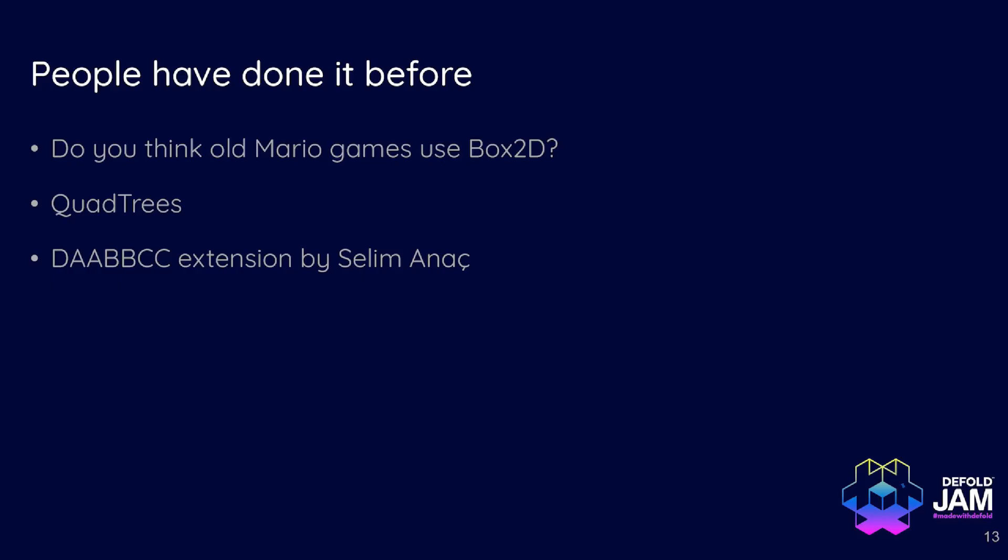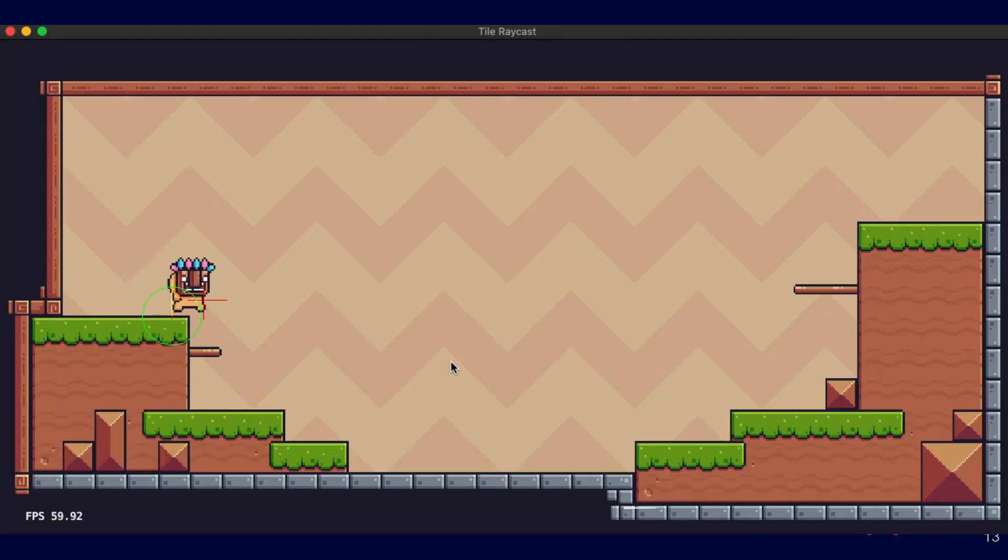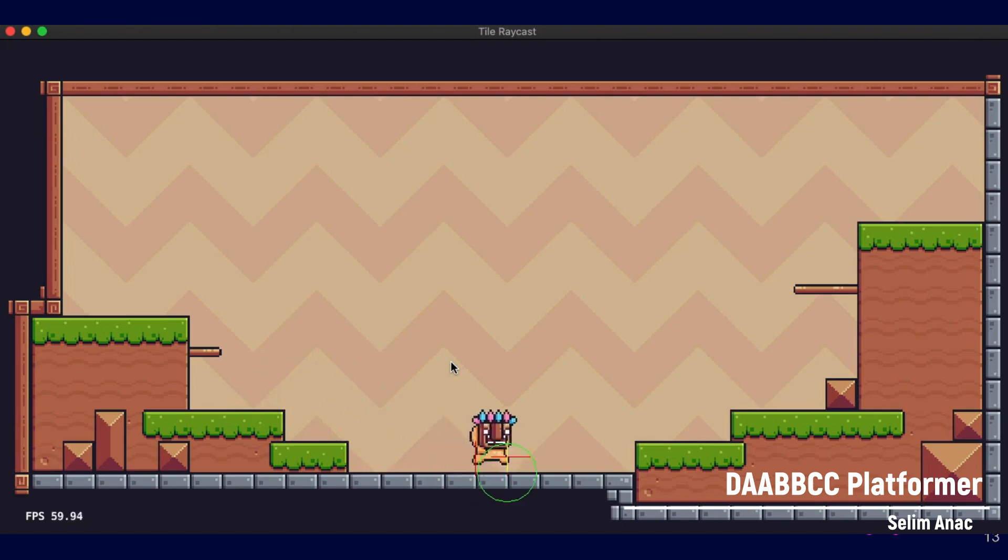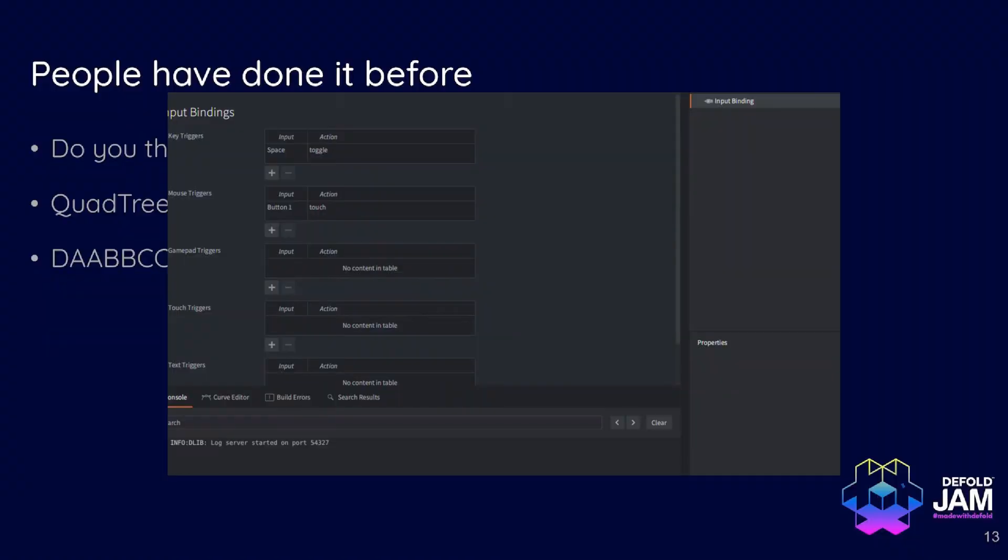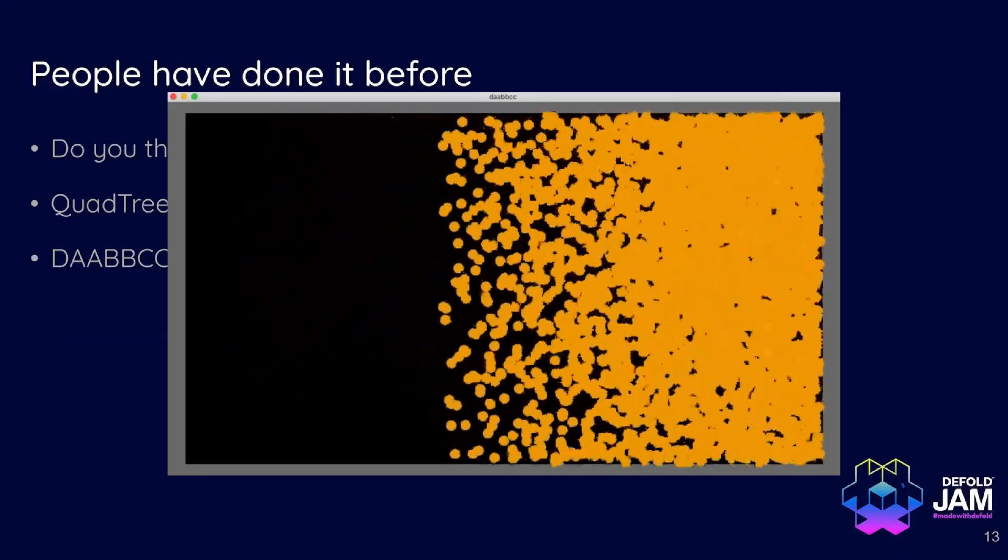But you don't even have to do it by yourself. There are other people who already made it, and you can just use their work. And there's also quite amazing extension AABBCC by Selly Manek for Defold. I haven't used it myself, but I believe it's a very good alternative. So you can create platformers using it, I think, quite good, and it will work very good. Things become so much simpler and easier when you remove all the unnecessary bits.